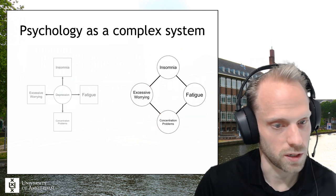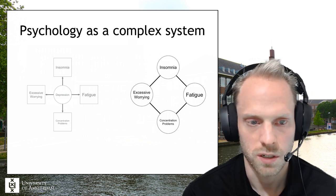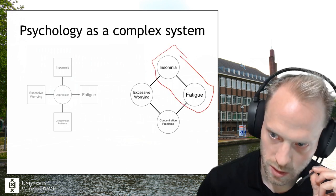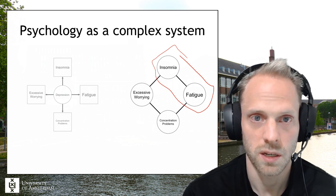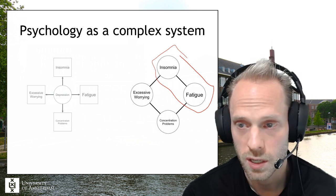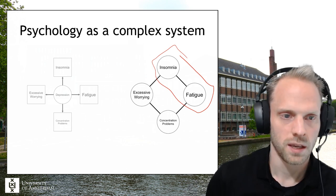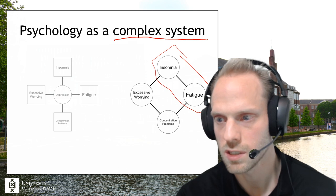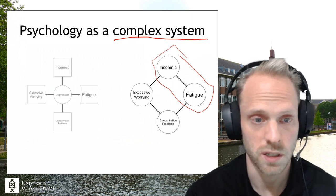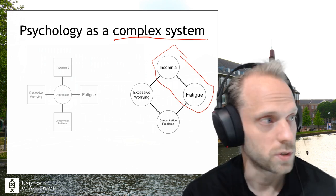Borsboom, Cramer, and others came up with the idea: if that's true, why not take it from the ground up and model this behavior between indicators directly, without needing a latent variable? Maybe you can explain why these items co-vary by having direct interactions between items. This is where the network perspective came from — we can look at these things as networks, as systems, as complex systems, where the behavior of the system can be explained by interactions between its elements.